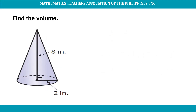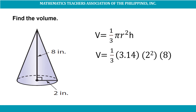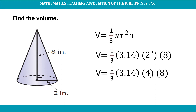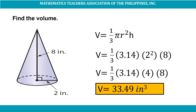Let's find the volume of this cone given its height of 8 inches and its radius of 2 inches. Using the formula V = (1/3)πr²h: V = (1/3) × 3.14 × 2² × 8 = (1/3) × 3.14 × 4 × 8. The volume of this cone is 33.49 cubic inches.